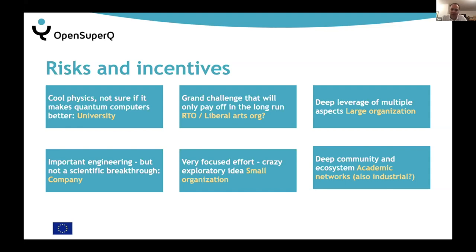If you want a very focused effort for exploration, you should probably be a small organization so you don't have to convince too many stakeholders. On the other hand, if you want to leverage a lot of internal resources, you should be in a big organization. My understanding is that IBM could leverage a lot of skills that were already in IBM — not quantum-specific — that they needed to find and develop further. For ecosystems, we need joint networks.